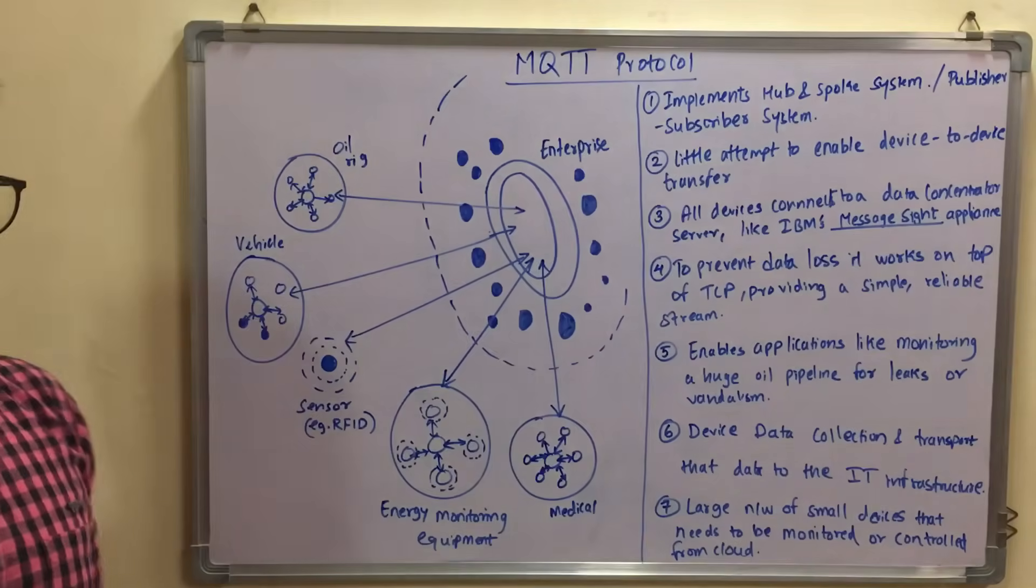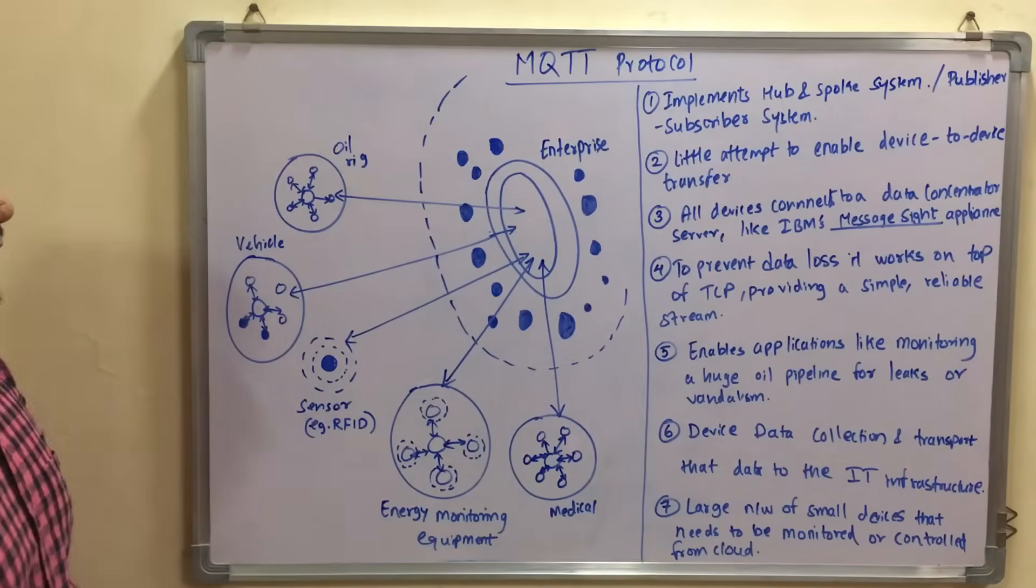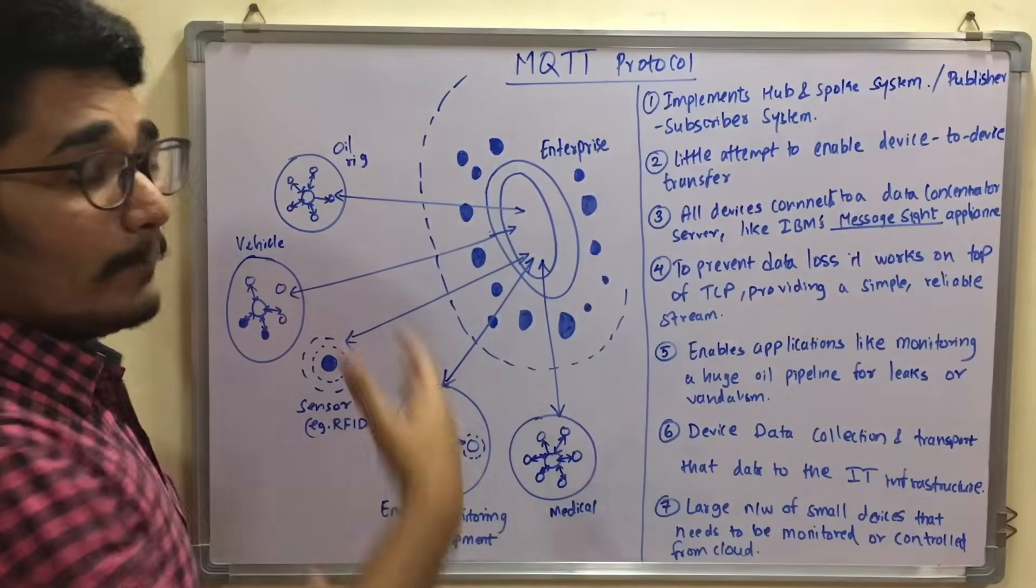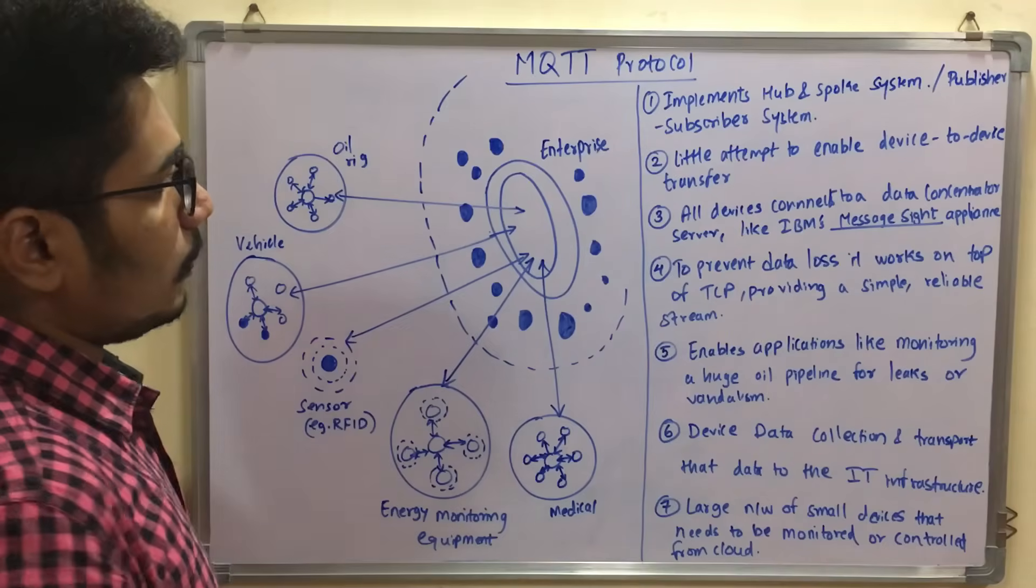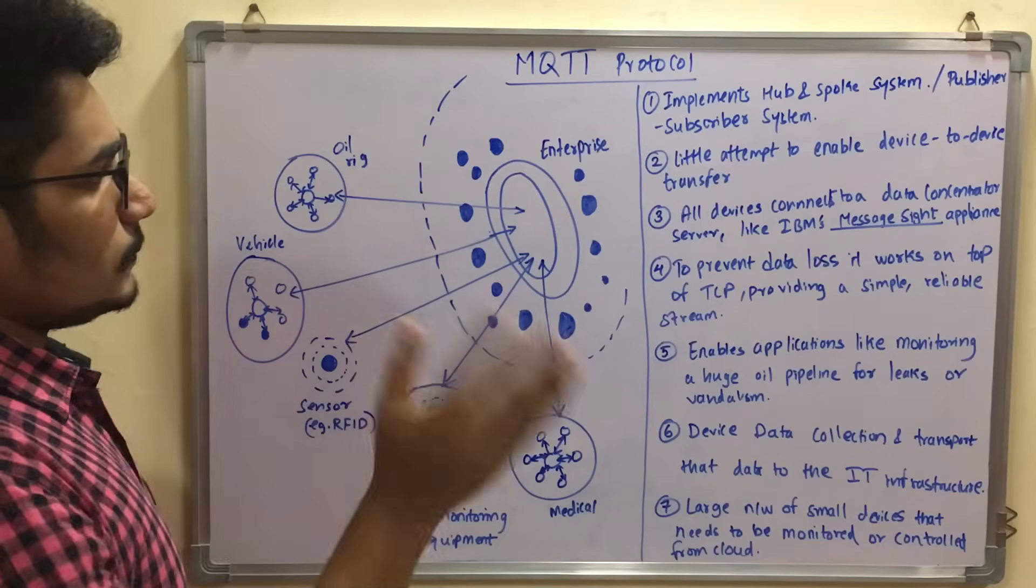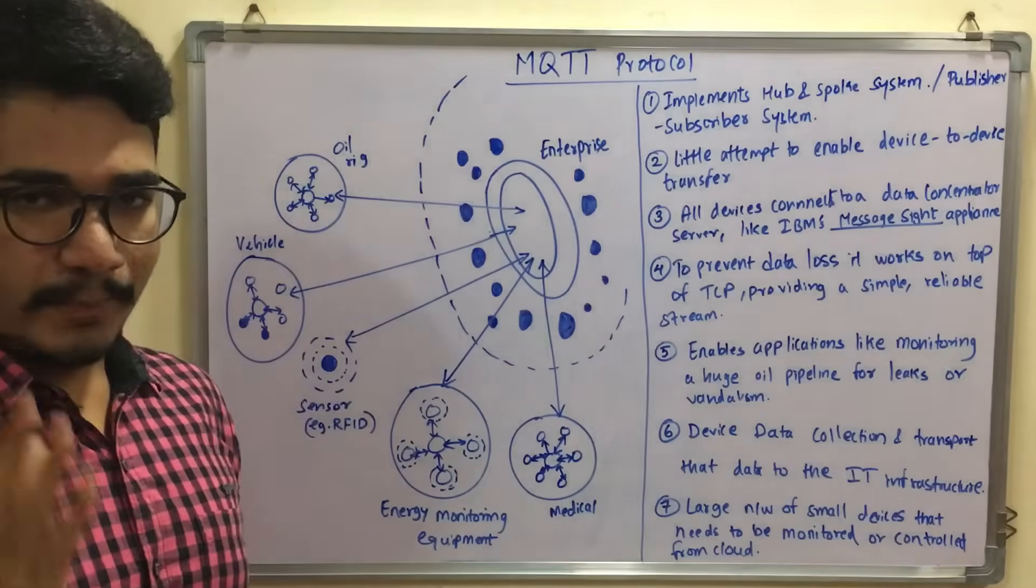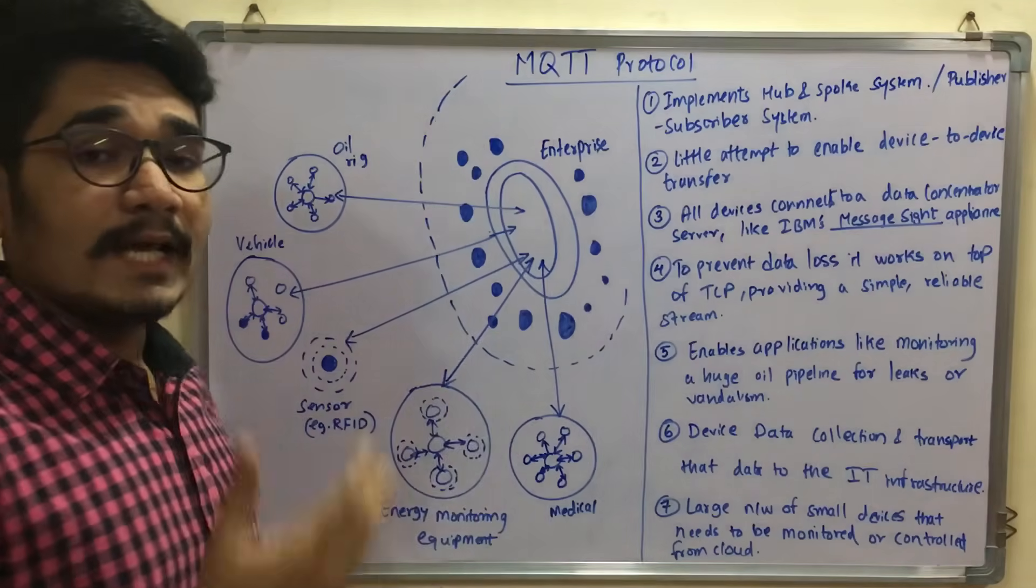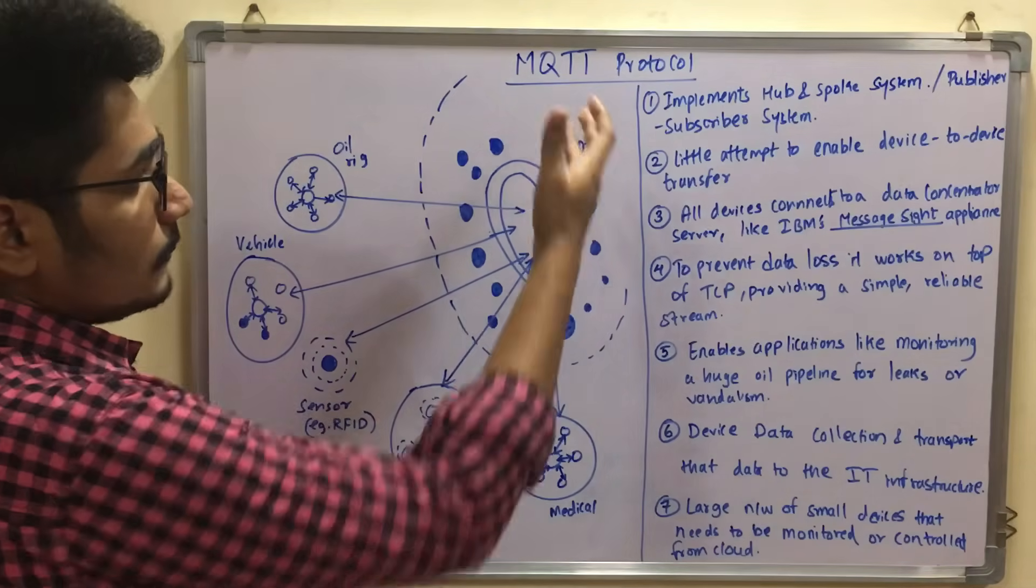Now we'll start the MQTT protocol. MQTT basically stands for Message Queue Telemetry Transport protocol. Let us break these two words: MQ, that is Messaging Queue, and there is Telemetry Transport which is used for transportation of different things or different data.